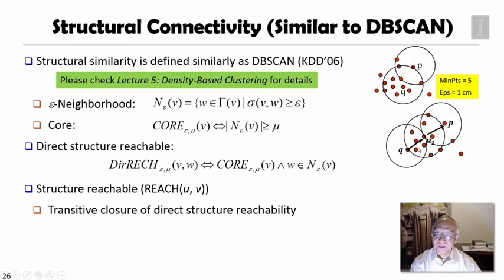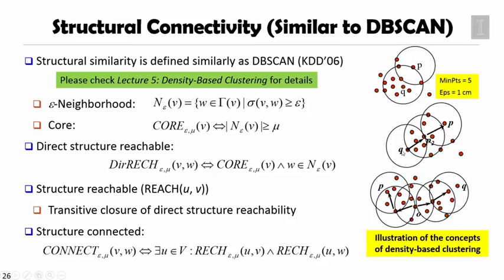You probably can see that's a very similar thing in DBSCAN. If you also have directly reachable, directly density reachable, this one is called directly structure reachable. The structure reachable essentially is a transient closure of directly structure reachable. If Q can reach P2, P2 can reach P, then Q will also be able to reach P. You use a sequence of directly reachable through transient closure.